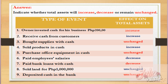Number three: bought supplies with cash. The effect on total assets is unchanged. Why unchanged? Simply because cash is just converted into another asset named supplies. For example, the supplies bought cost 1,000 pesos — the 1,000 pesos cash is replaced by supplies in the form of other assets. So the effect on total assets is unchanged, because cash was simply replaced by supplies.